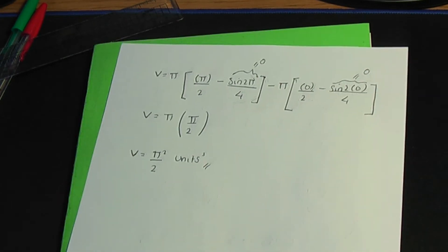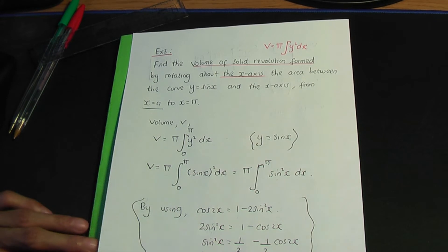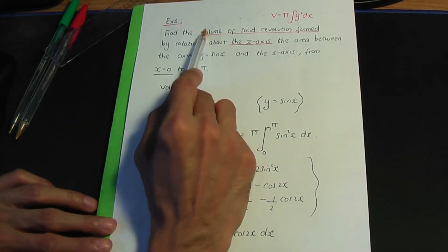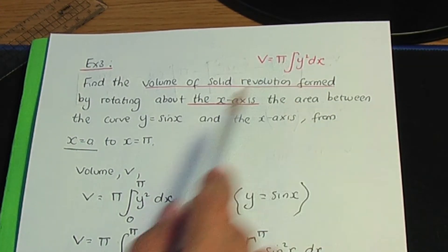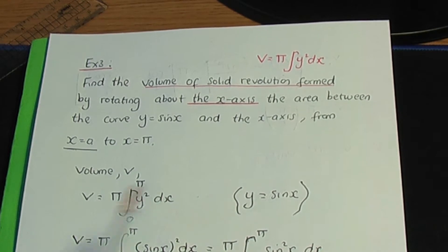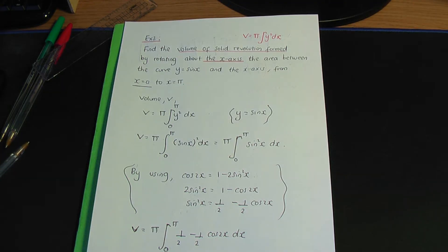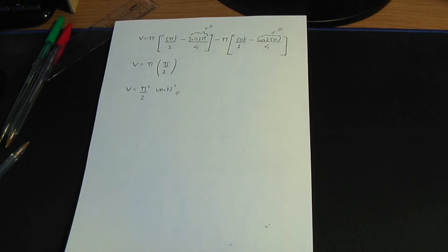So that is the solution to this volume-related problem. Remember, we're working out the volume of solid of revolution about the x-axis, and that is why we use the formula pi into the integral of y squared dx. If it were about the y-axis, it would be pi into the integral of x squared dy. That ends this example and the video — I hope you enjoyed it, a like is very much appreciated, and I hope to see you again.